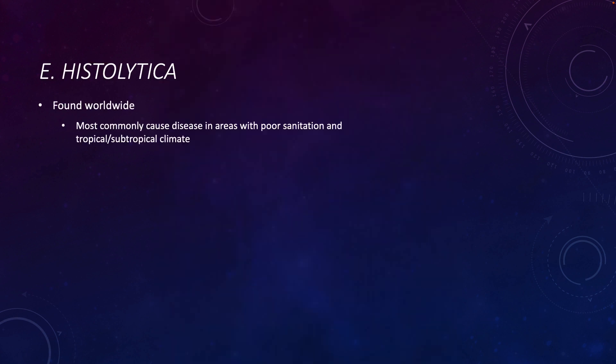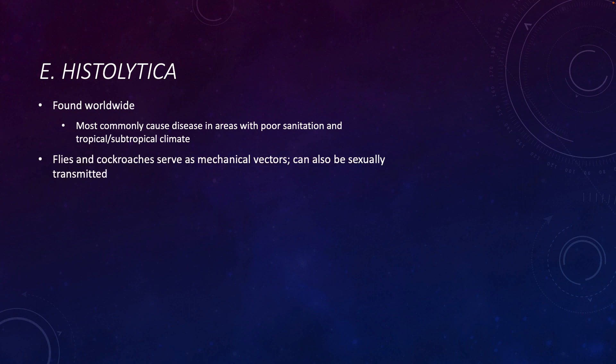The first species that we'll talk about is Entamoeba histolytica, or E. histolytica. This amoeba is found worldwide, but it is more common as a disease-causing agent in areas that have poor sanitation or have a tropical or subtropical climate. Not unheard of in the US, but not terribly common. Flies and cockroaches can serve as mechanical vectors.